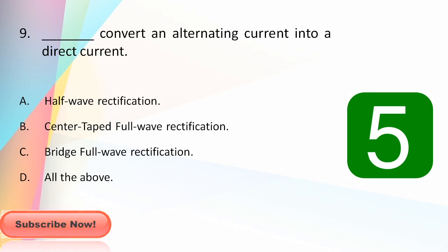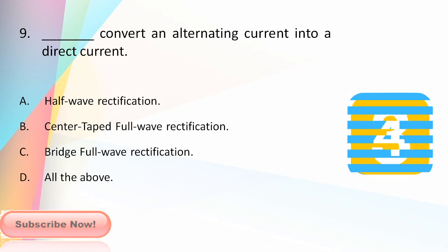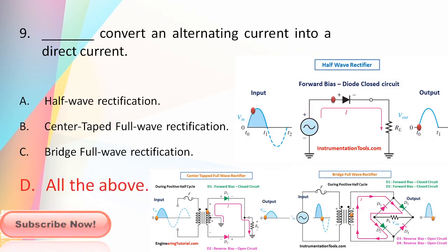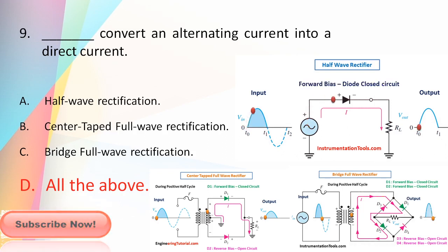To convert alternating current into direct current, all of the following can be used: half-wave rectification, center-tap full-wave rectification, and bridge full-wave rectification. All these circuits perform rectification — the bidirectional input is converted into unidirectional DC.